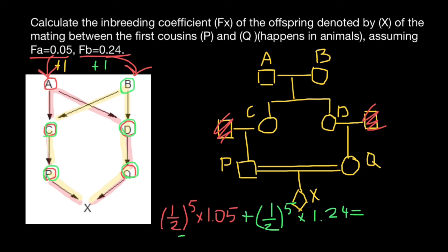Our answer is going to be 0.0716. This is a rounded number. If you need an answer in percent form, we just multiply this answer by 100. That means we move this decimal point two places to the right. The answer is going to be 7.16%. This is the inbreeding coefficient of individual X.